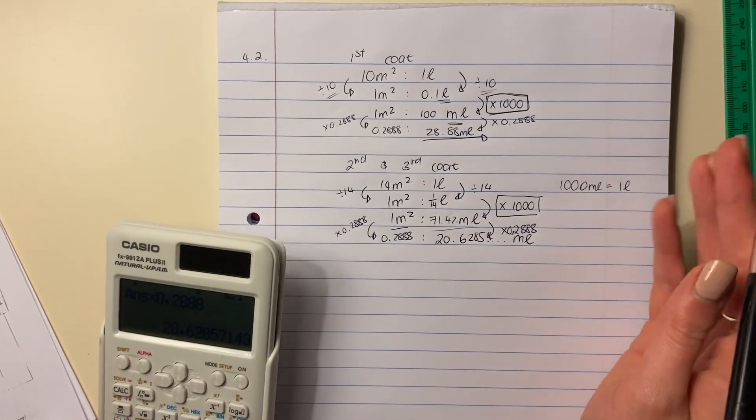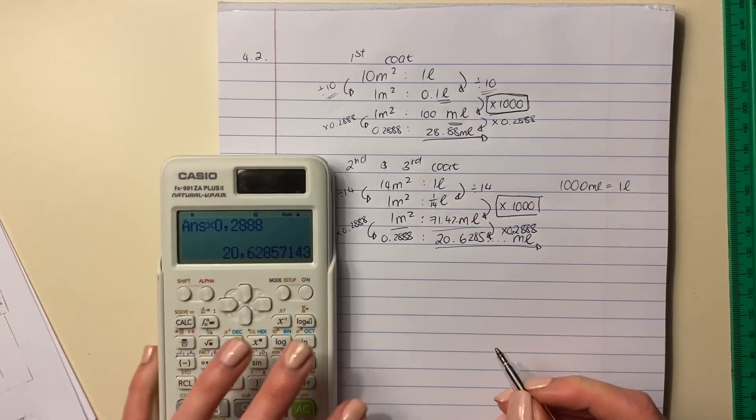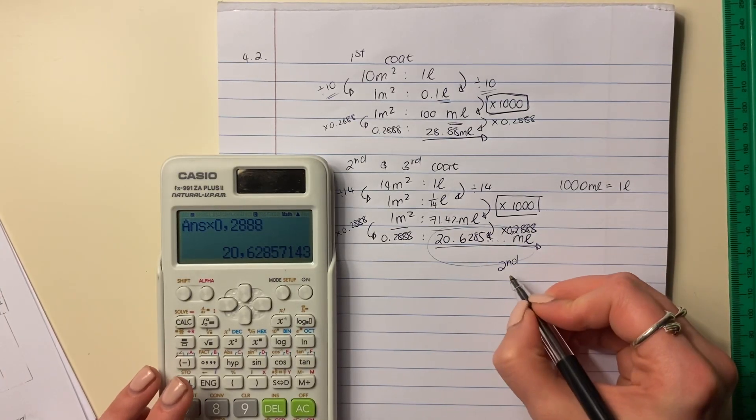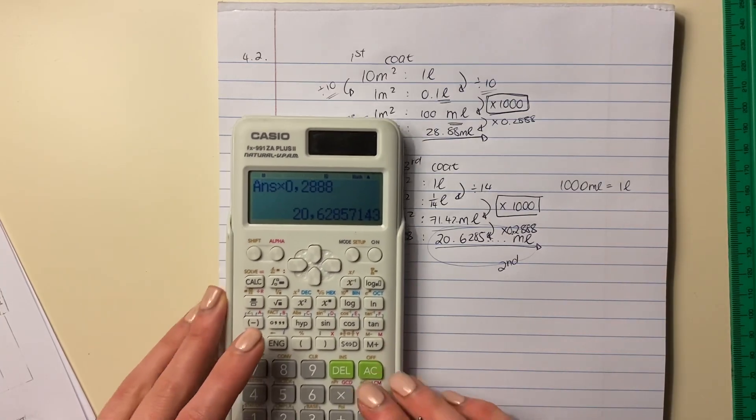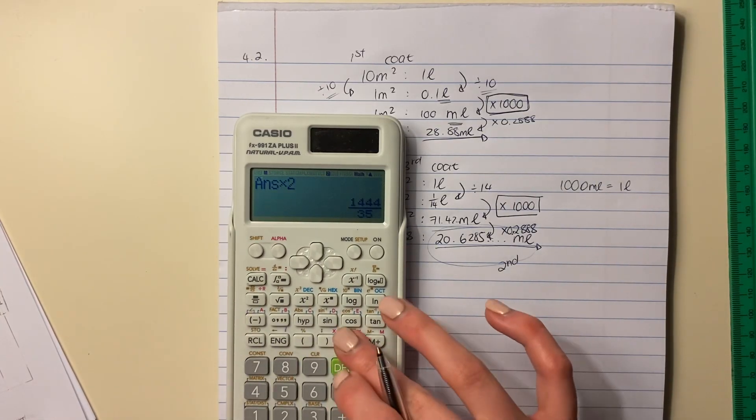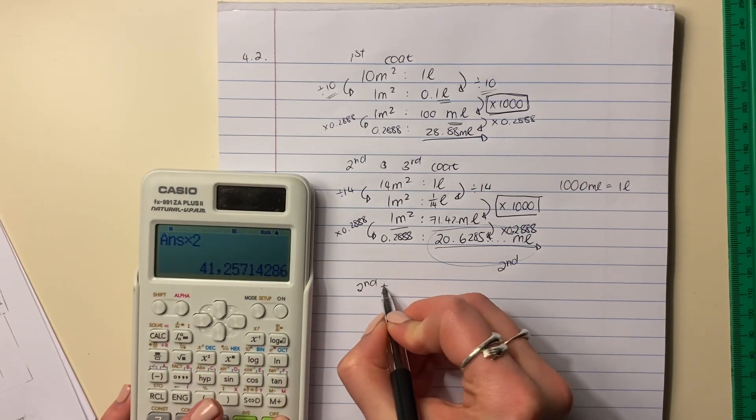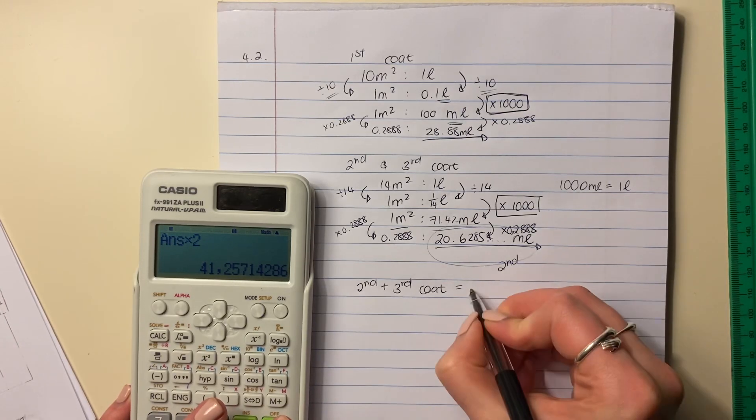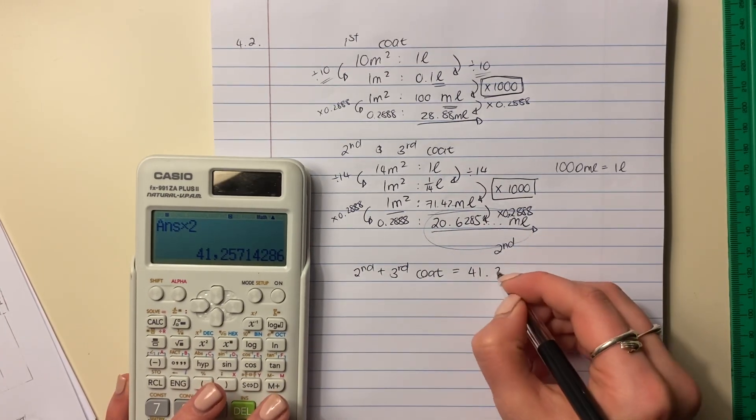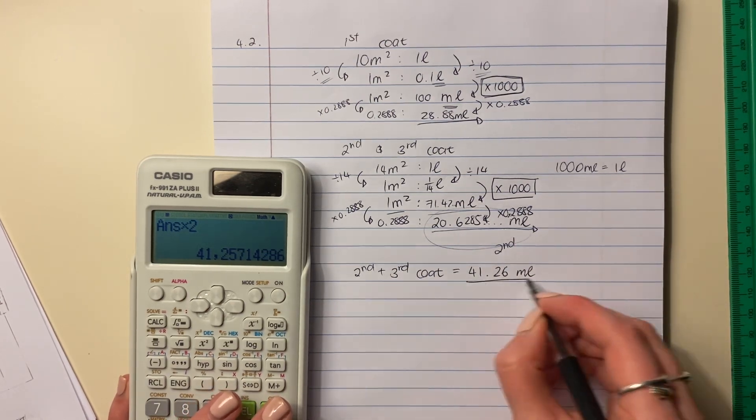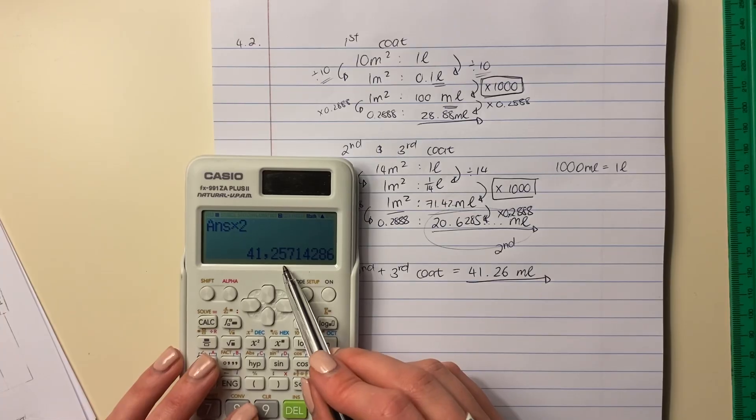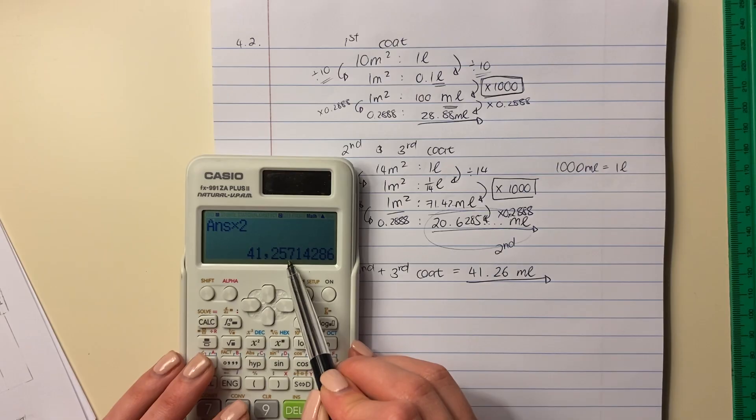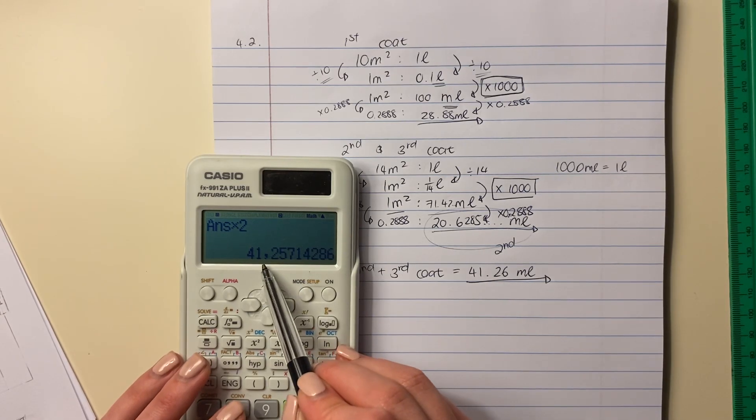Now, you could be saying, Maggie, why are you not rounding off? Well, this is not our final answer. So this is for the second coat, and then we need to times it by 2 because it's also for the third coat. So let's times this by 2 because it's the second and the third coat. So you can say the second and third coat, it's going to be 41.26 milliliters. And the reason I rounded off is we're getting towards our final answer. I wanted it to be two decimal places. Seven is above five, so you round it up and it's 41.26.